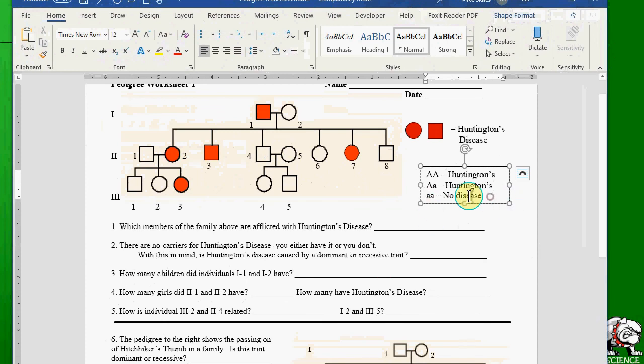Now, what if it's a recessive trait? So let's take a look at that possibility. We'll delete all these out. So this time, Huntington's is the lowercase a, recessive. How does that look?